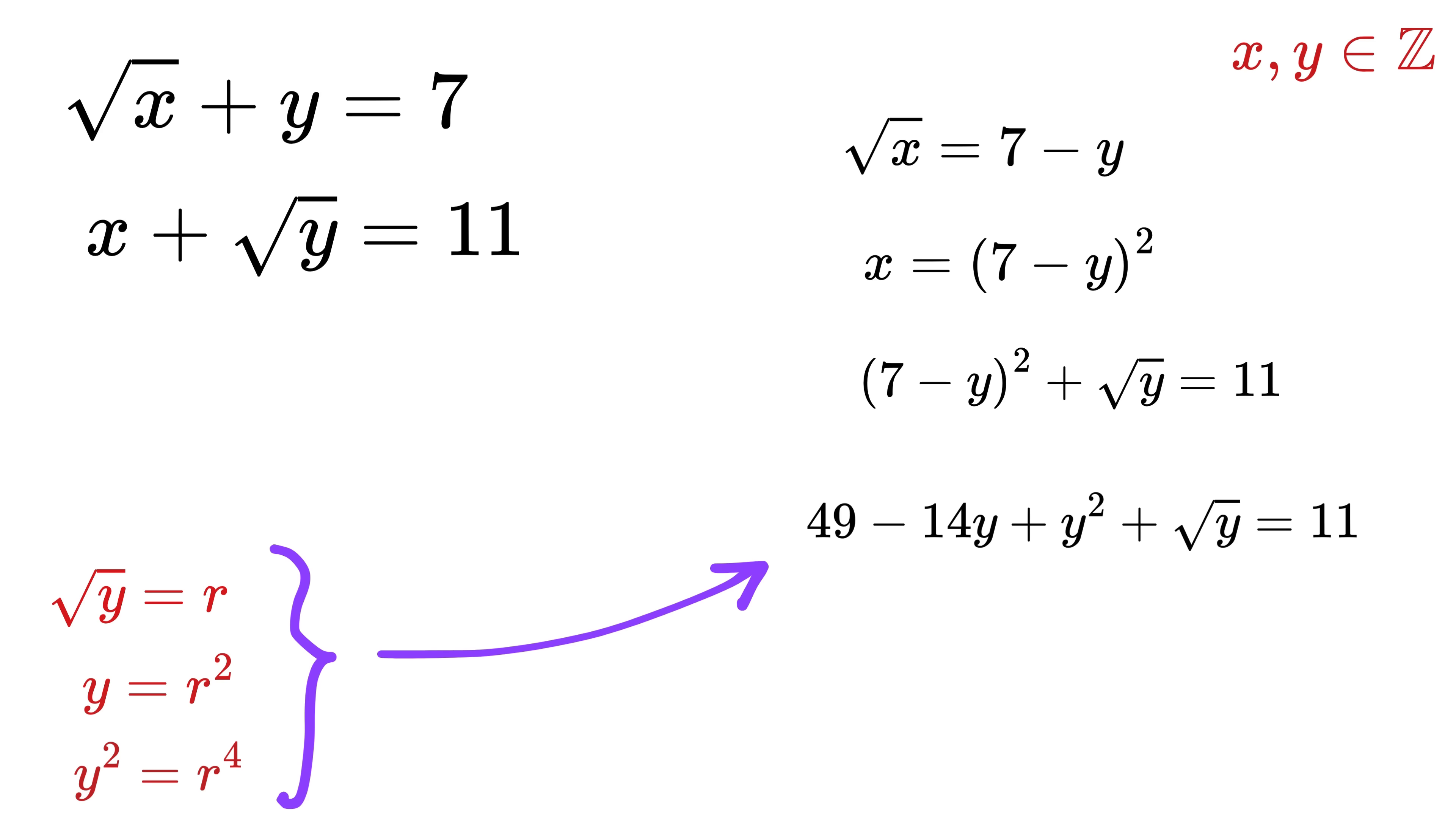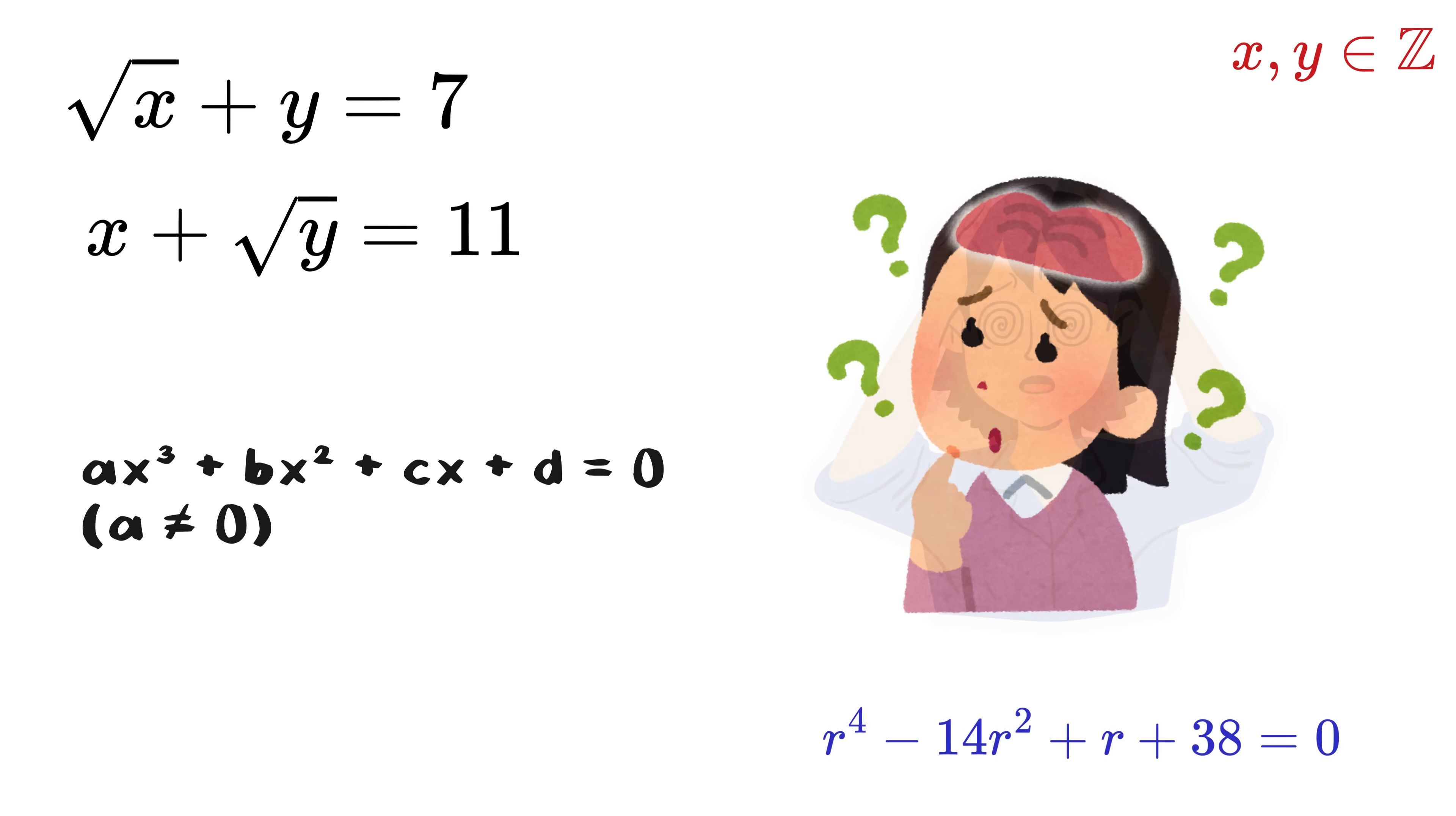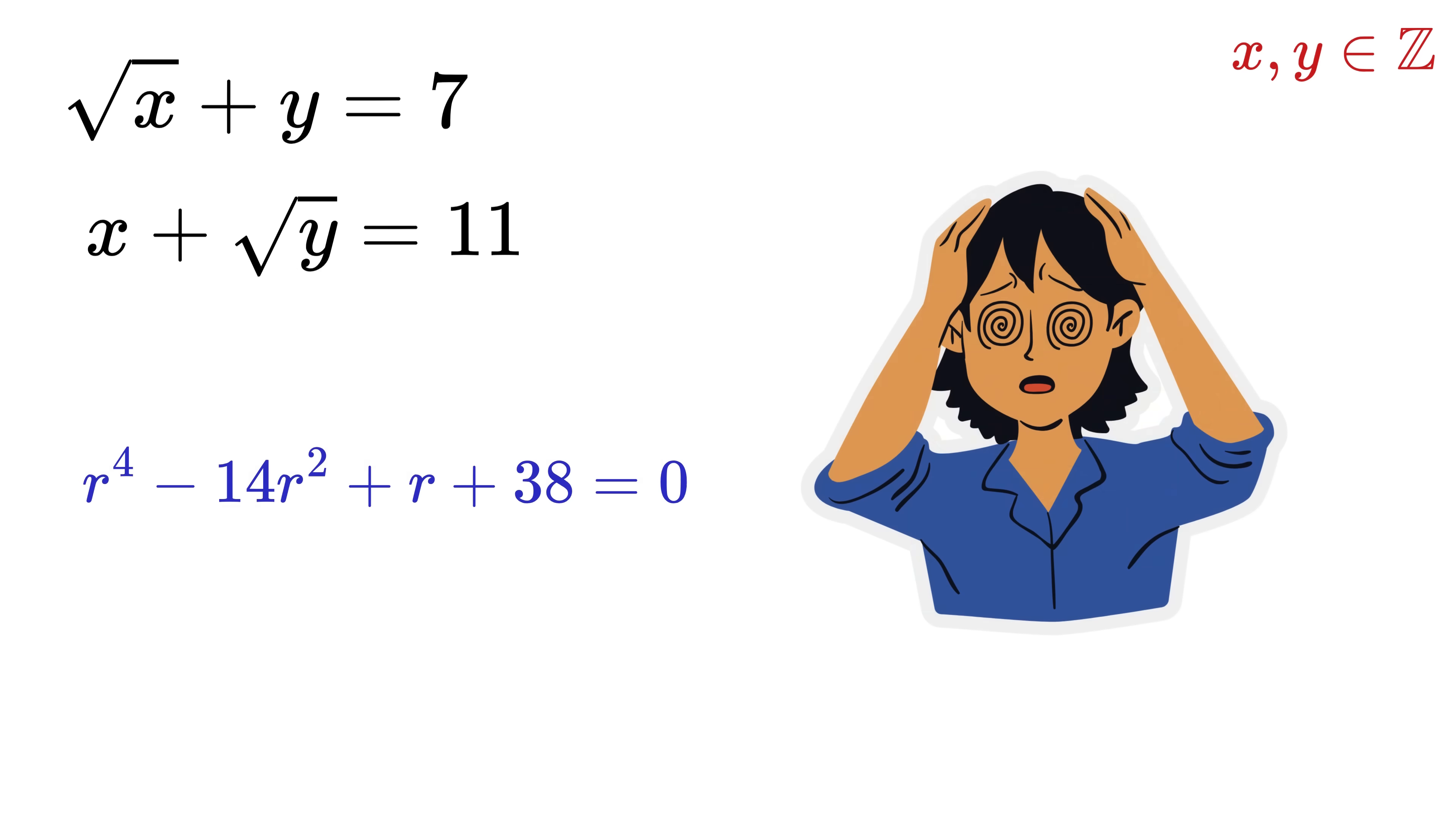Substitute all three of them here to get 49 minus 14r² plus r⁴ plus r equals 11, or rearrange properly to get this quartic equation. And yes, this is where the nightmares begin. We don't even know how to solve a cubic equation properly—how can we even dare to solve a quartic equation?